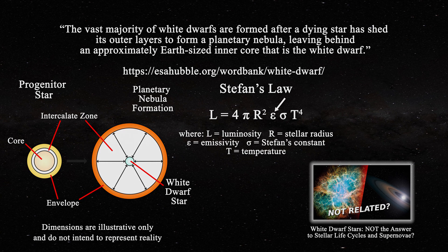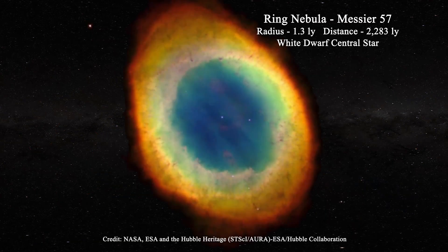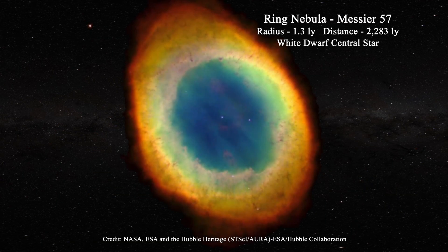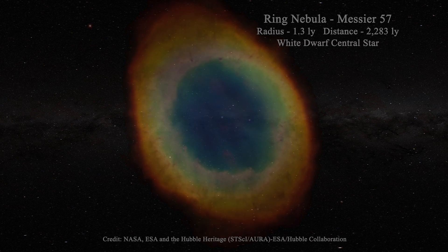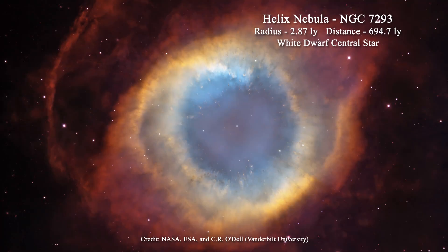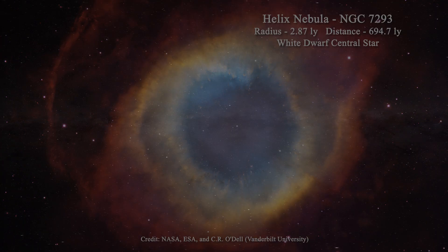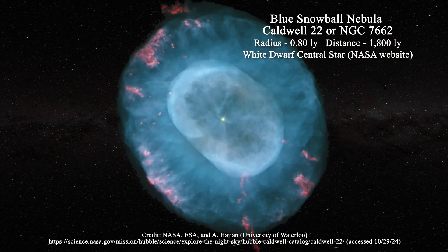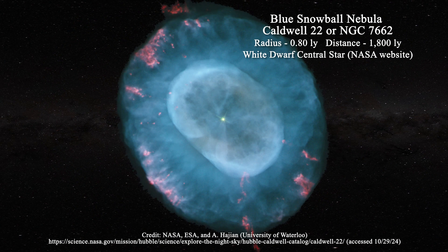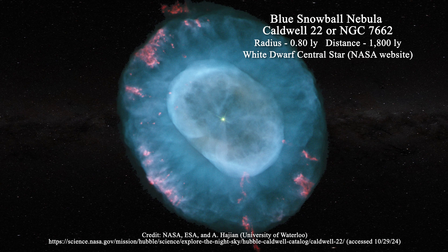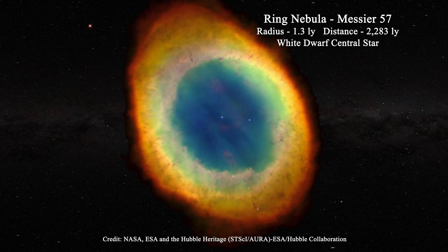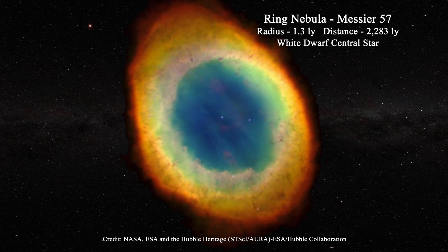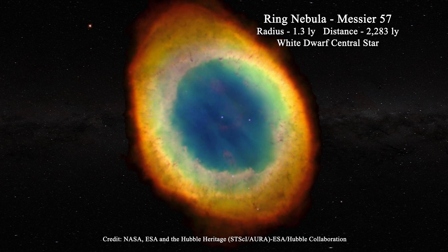Some of the most well-known planetary nebulae include the Ring Nebula, which has a white dwarf as a central star. The same is true for the Helix Nebula NGC 7293. Next, have a look at Caldwell 22 or NGC 7662, nicknamed the Blue Snowball Nebula — it also has a white dwarf at its center. The vast majority of white dwarf stars are actually central stars of planetary nebulae.